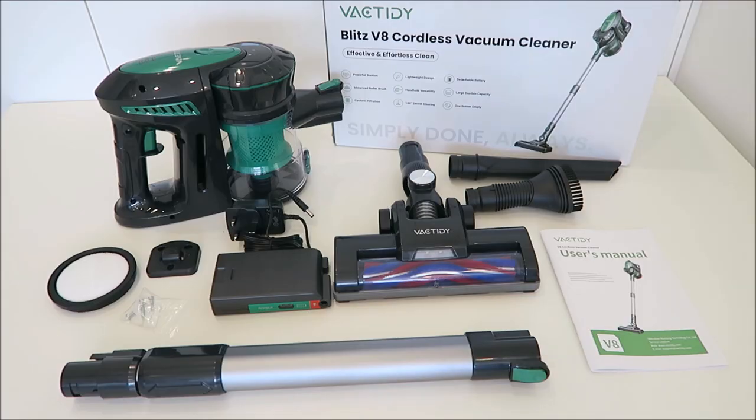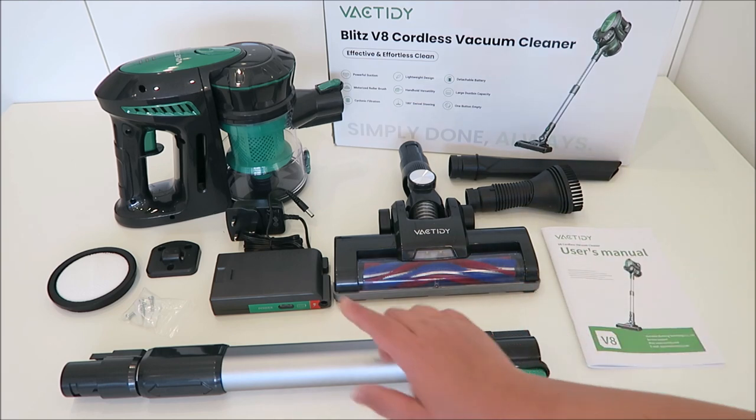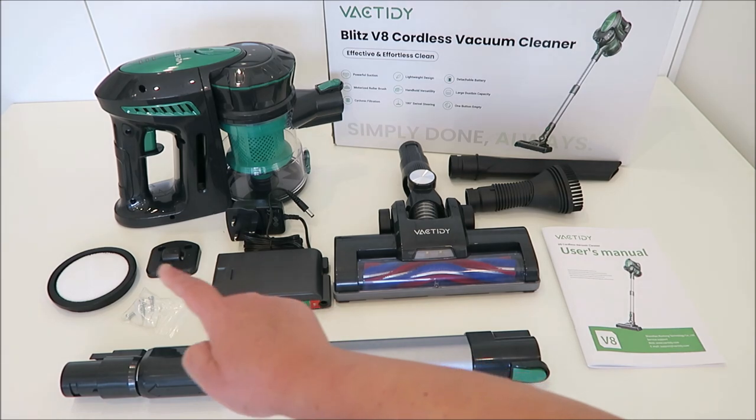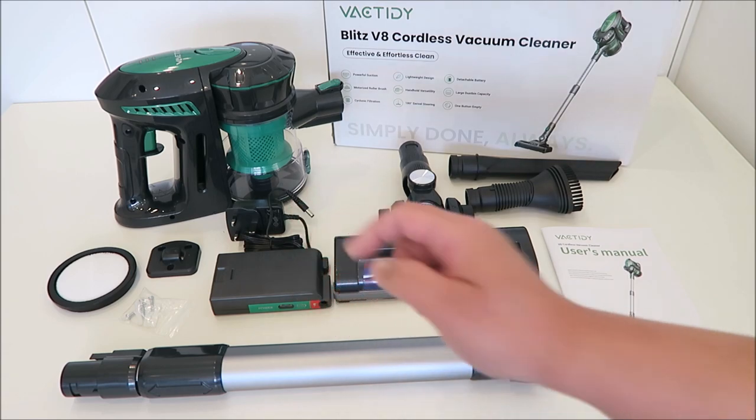So this is what's inside the box. We have three different types of nozzles. We have the instruction manual, the extension, batteries, charger, a wall bracket, extra HEPA filter, and the handheld.